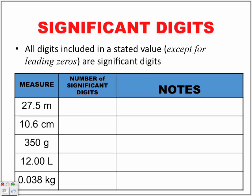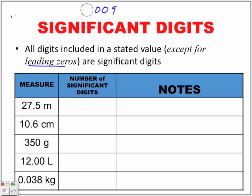Let's look at all digits included in a stated value except for leading zeros. Leading zeros are those zeros that are in front of a really small number. First example: 27.5 meters — the number of significant digits is three. The side note here: all non-zero digits are considered significant.